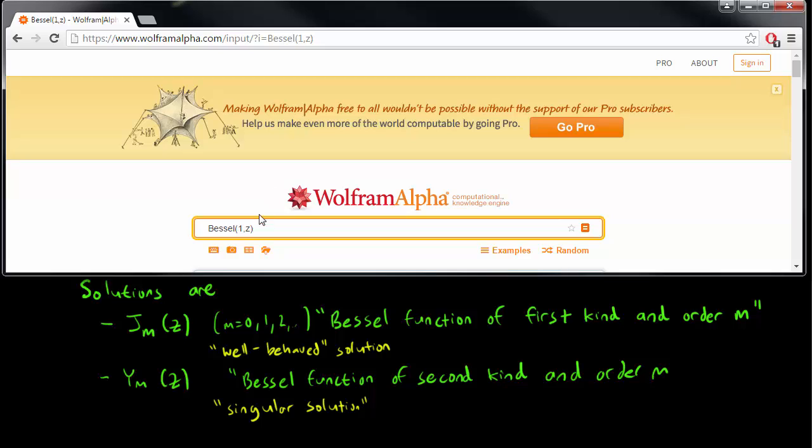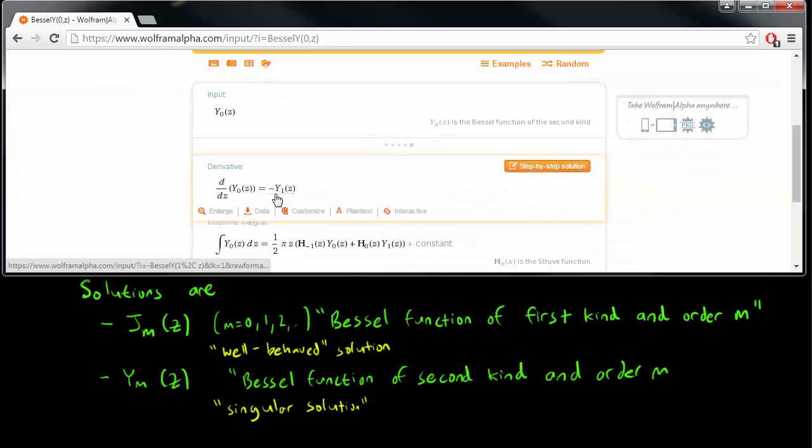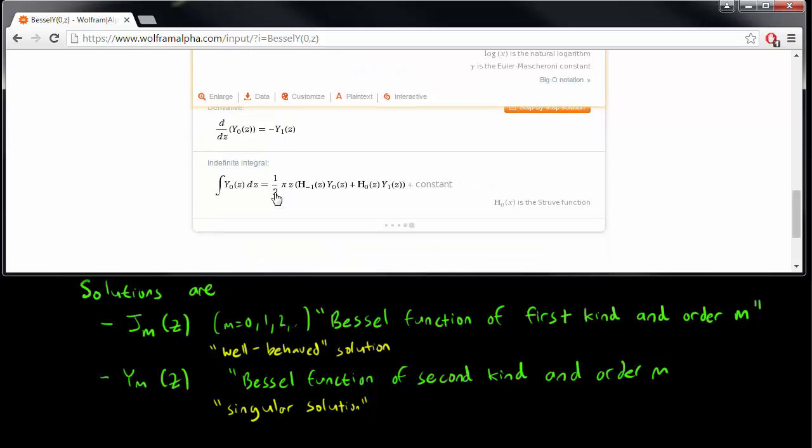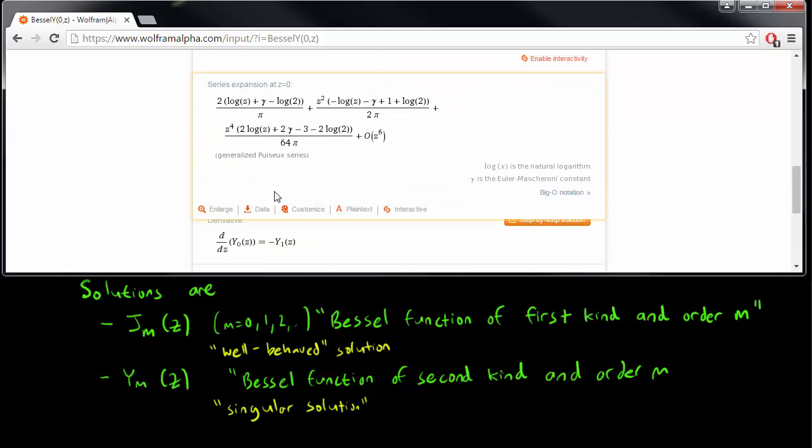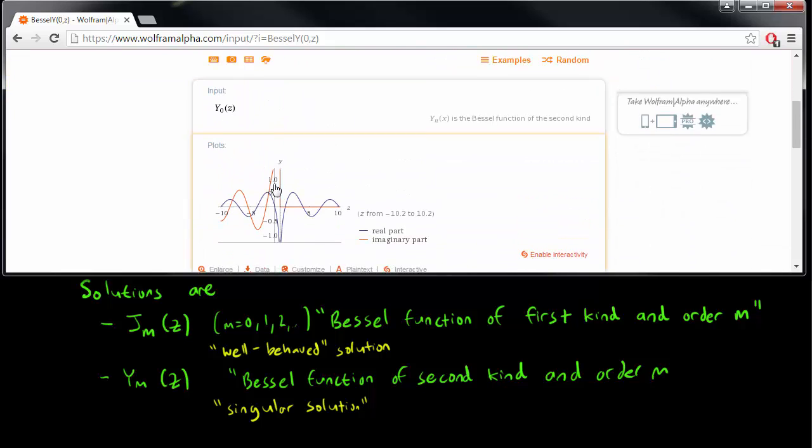And if you care about what the second kind Bessel functions look like, just add a y over here. So let's say Bessel y of m equals 0.